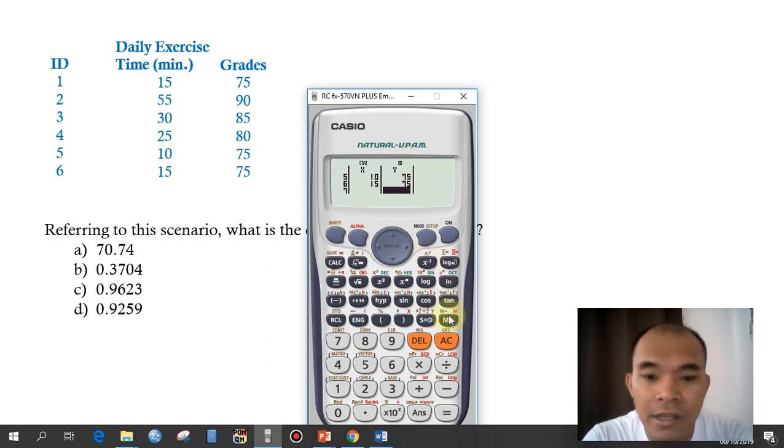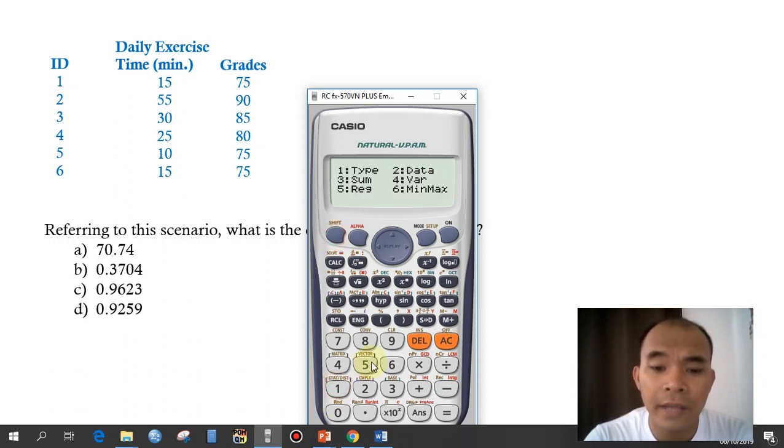Then just press AC. So, to solve for the coefficient of correlation, go to shift. Start. And then the regression, 5. And then the R value here. 3. And then just simply press equals.